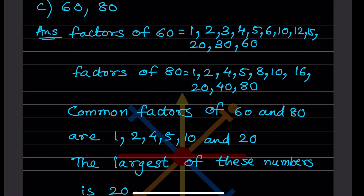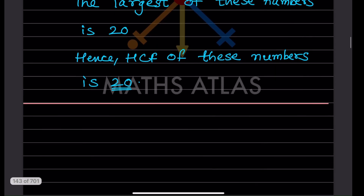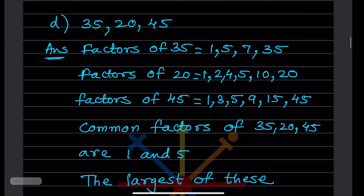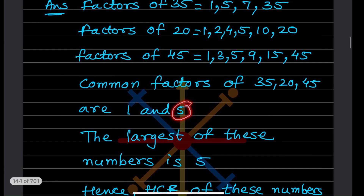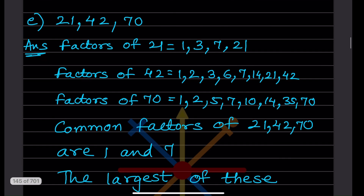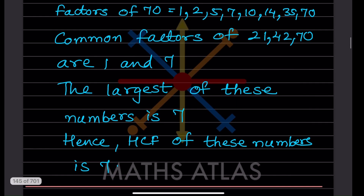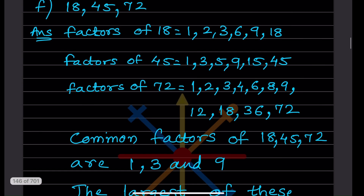You can check the common factors — the steps are given here. The largest common factor for the next pair is 30, so the HCF of those numbers is 30. For the following example, the largest common factor is 5. Then for 21, 42, and 70, we find the common factors across all three numbers, and the largest is 7. So the HCF is 7.